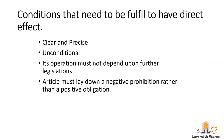As mentioned earlier, direct effect is available only if certain conditions are satisfied. These conditions were identified in the Van Gend en Loos case and are therefore called the Van Gend criteria. They are: the provision must be clear and precise, unconditional, its operation must not depend on future legislation, and an article must lay down a negative prohibition rather than a positive obligation.